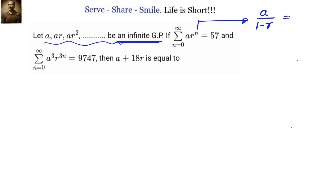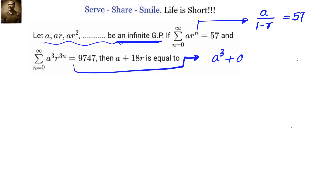We know the sum of infinite terms is given by A divided by (1 minus R). So we have our first equation: A by (1 minus R) equals 57. For our second equation, substituting terms with n equals 0, 1, 2, 3...